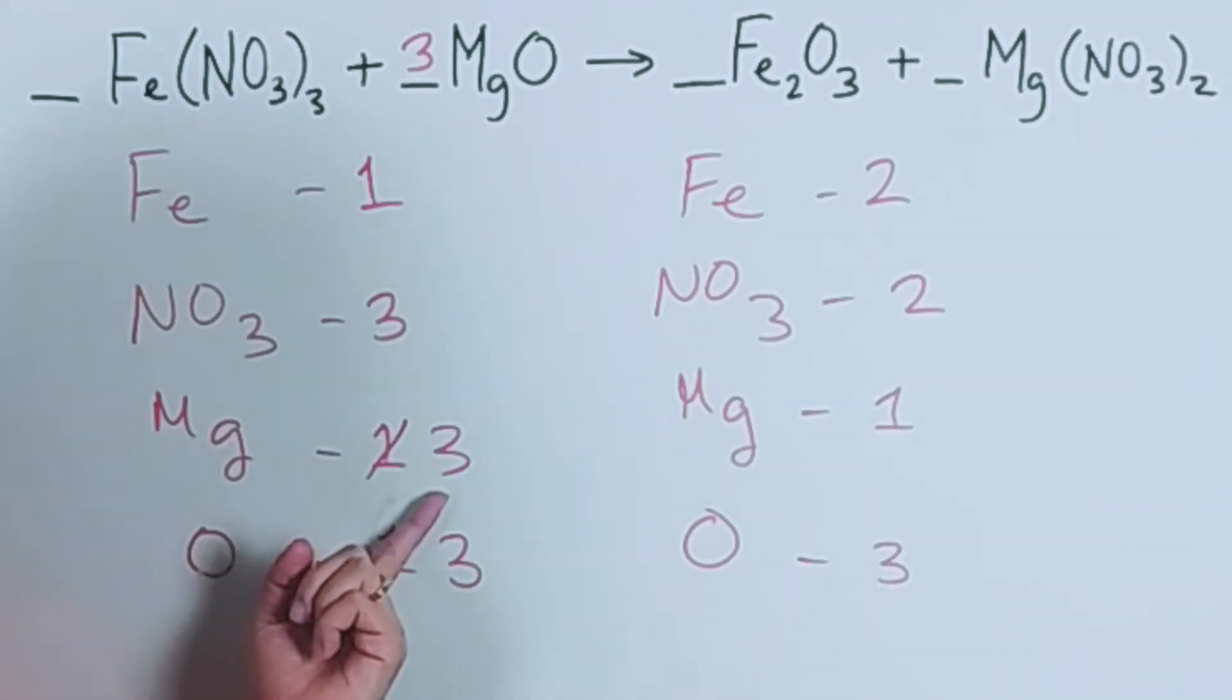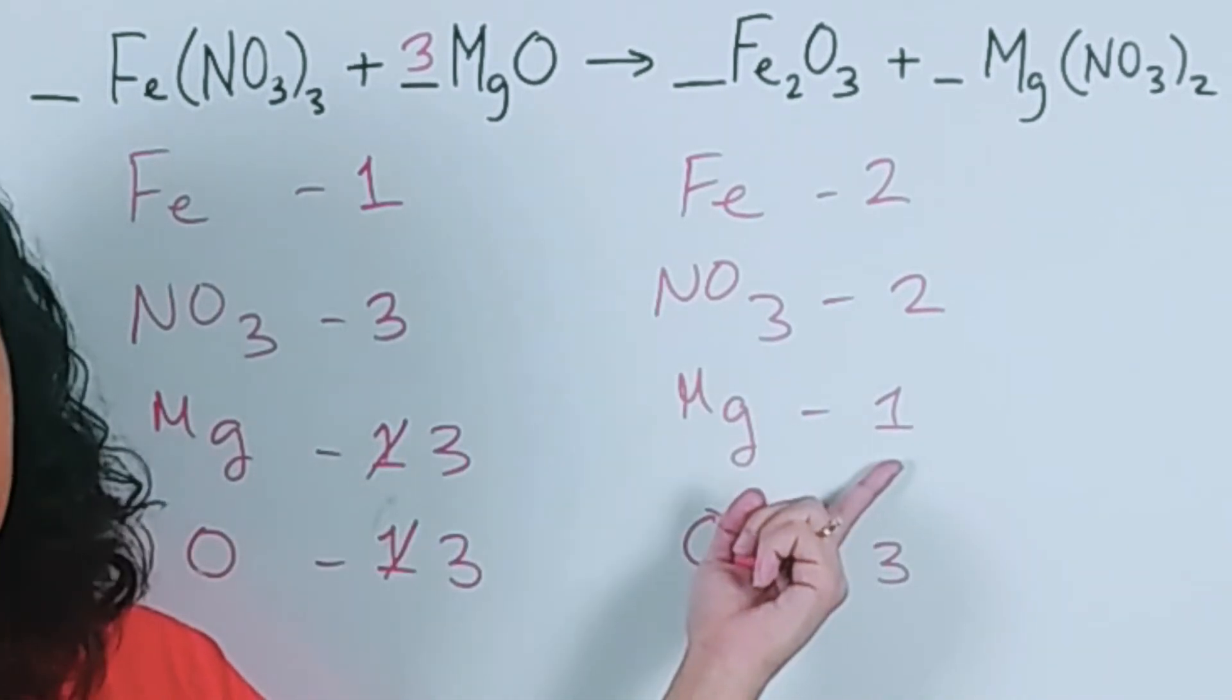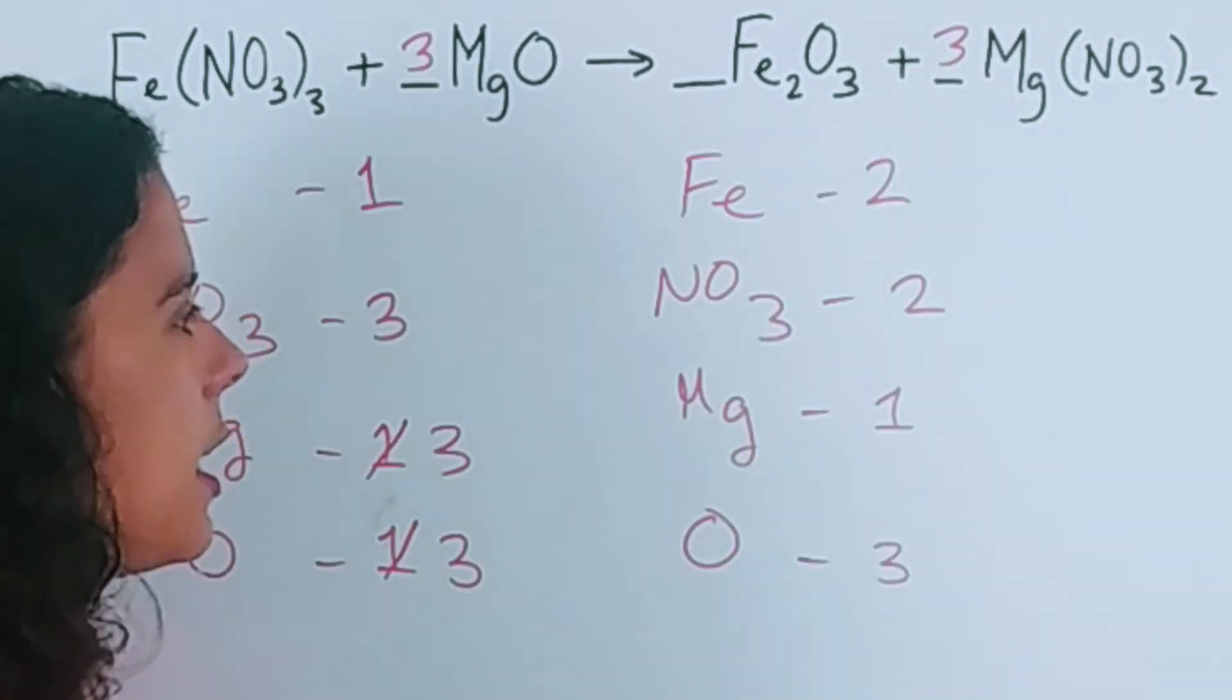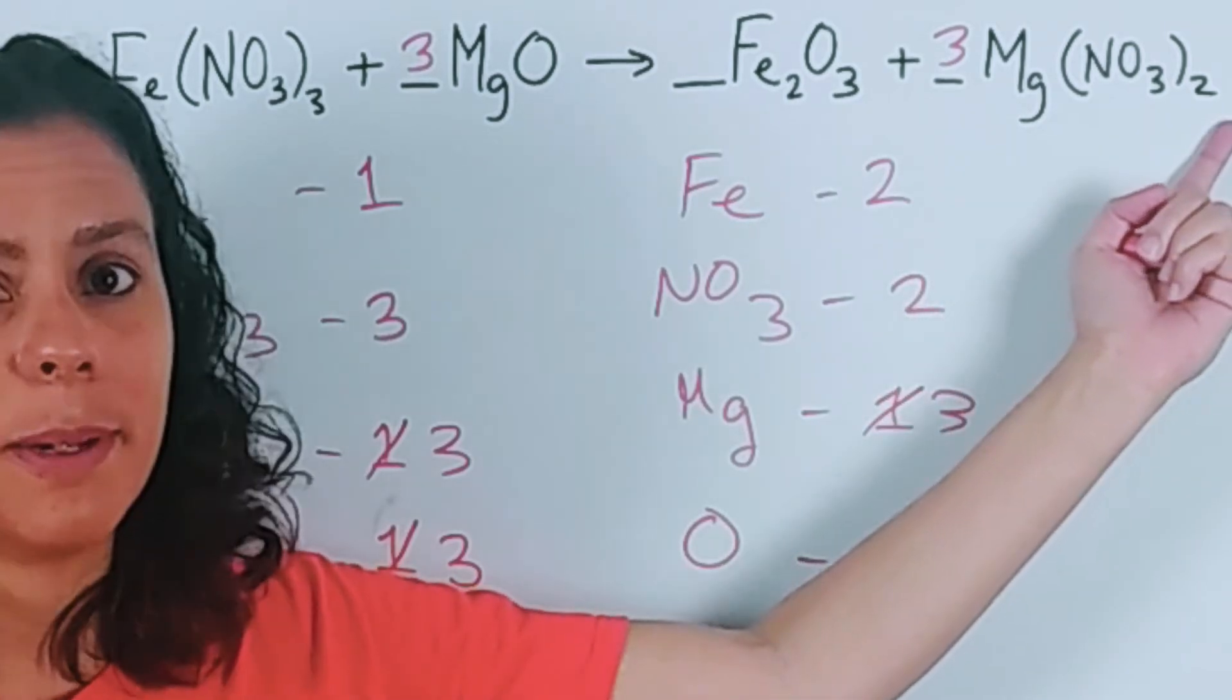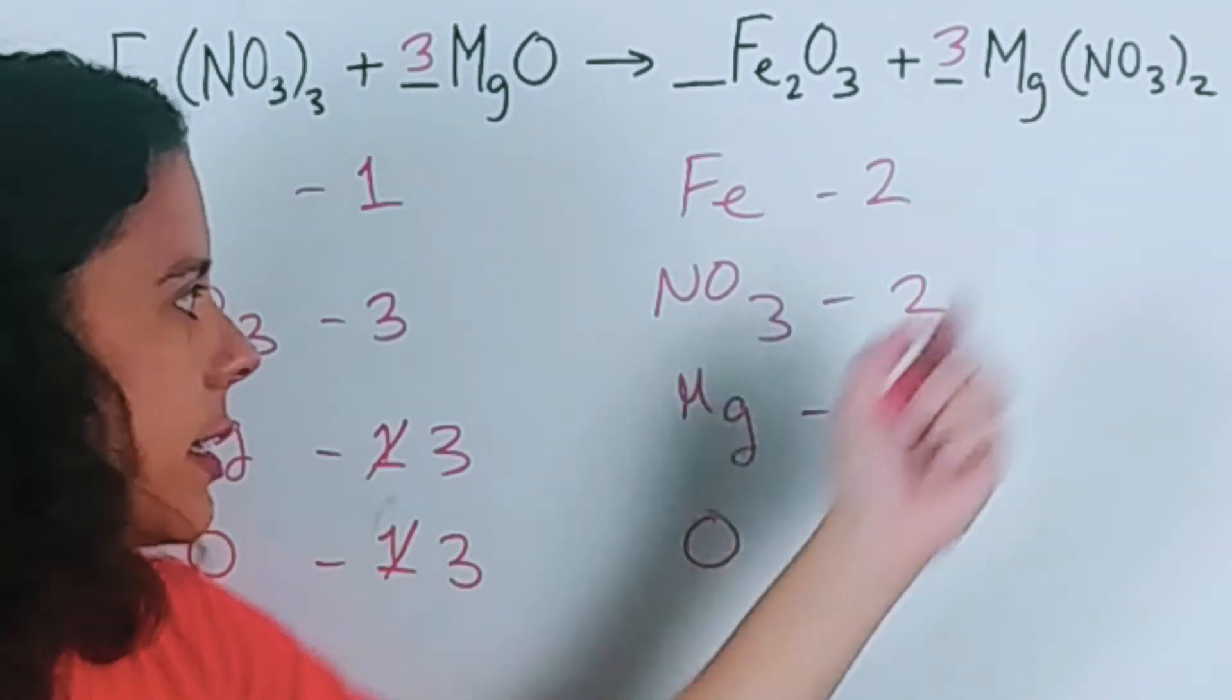So I write a three here. That would give me three magnesium, but that also is going to modify my nitrate. So now I have six nitrates. Now I go to nitrate on this side.